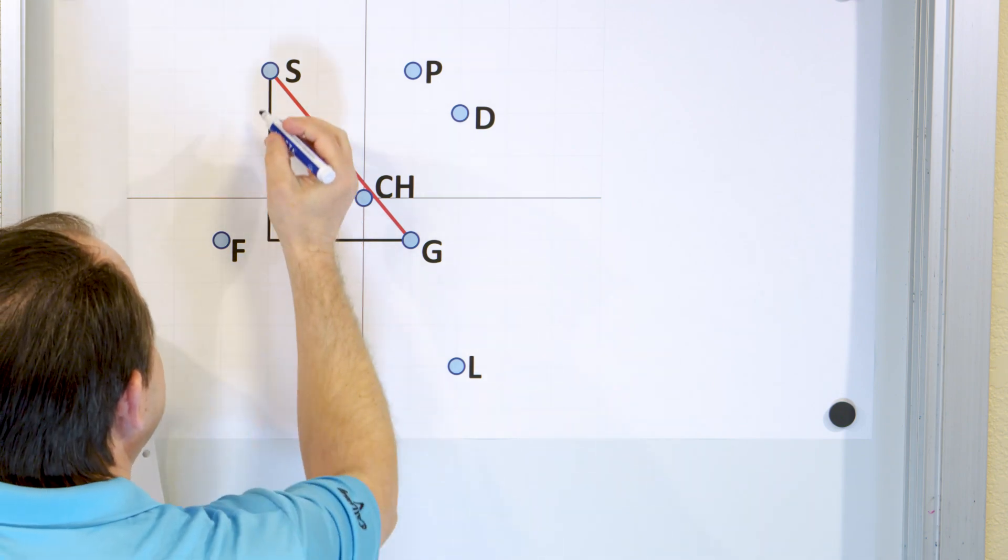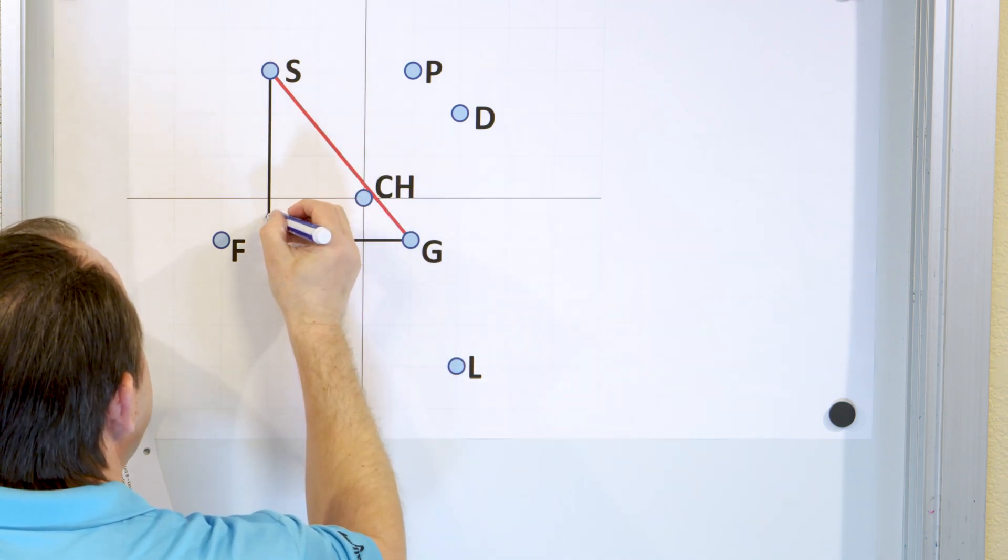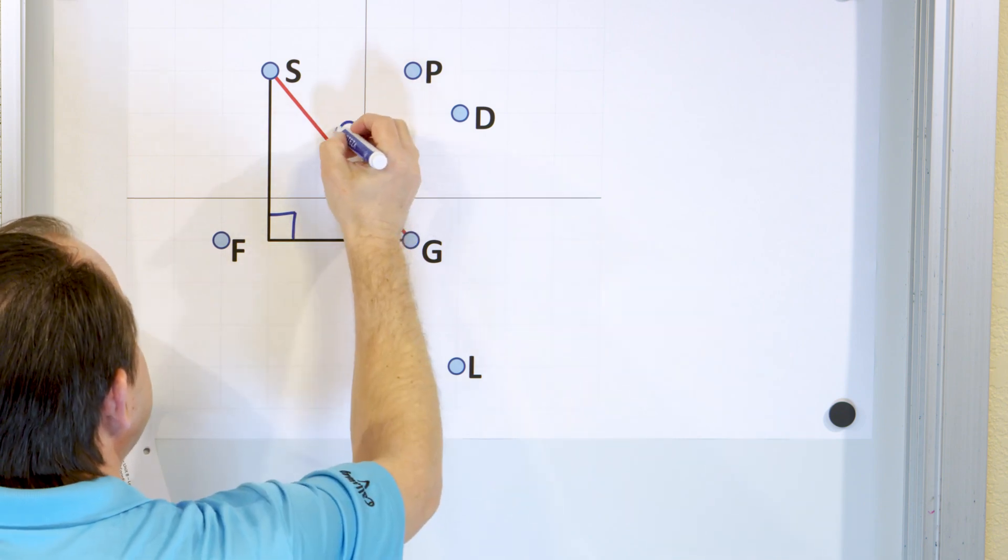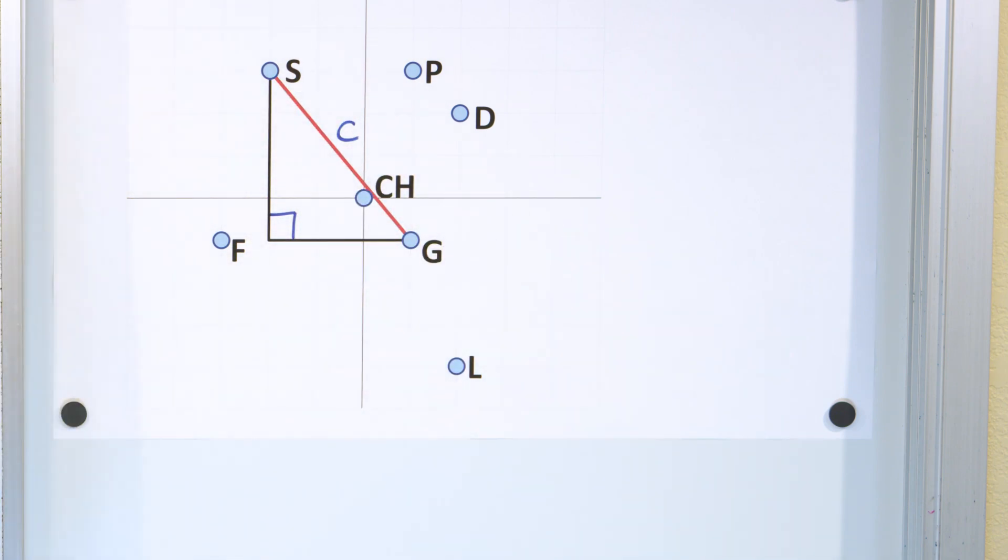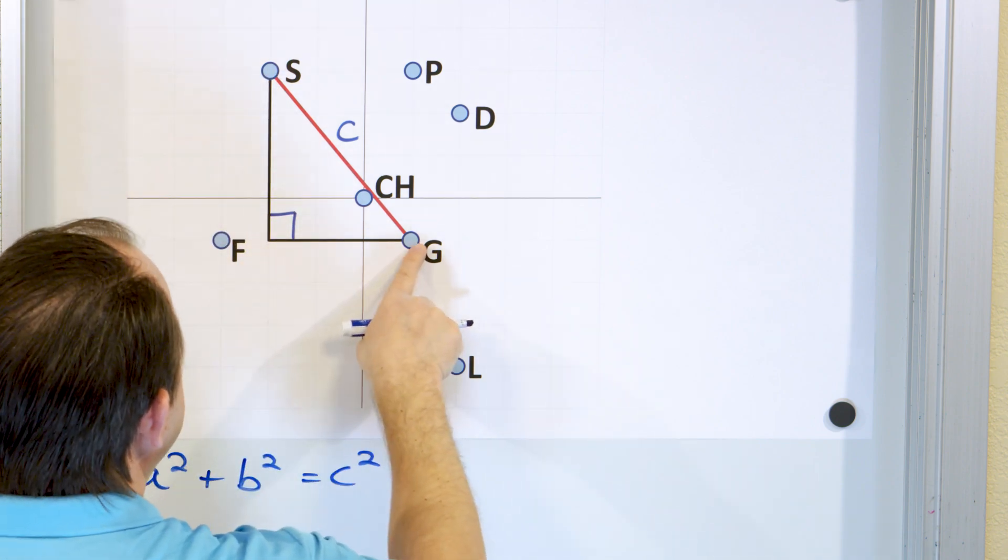Well, first of all, it's important for you to know that anytime you draw a triangle on a grid like this, you have a right angle in the corner. And so this is the hypotenuse. And we know that a squared plus b squared is equal to c squared. And we're going to call this a and b.